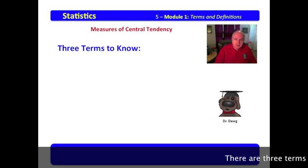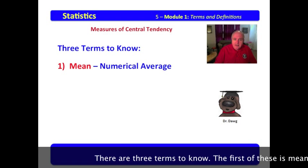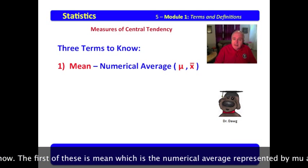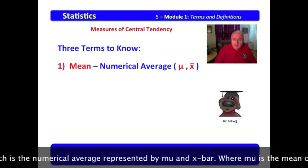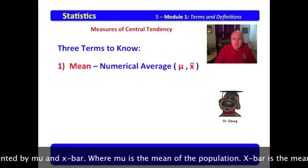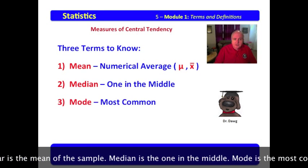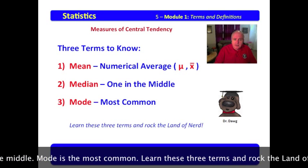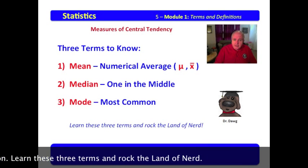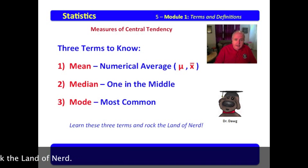There are three terms to know. The first of these is mean, which is the numerical average represented by mu and x-bar, where mu is the mean of the population, x-bar is the mean of the sample. Median is the one in the middle. Mode is the most common. Learn these three terms and rock the land of nerd.